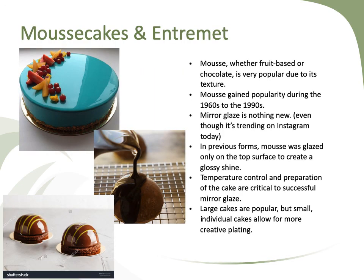There are mousse cakes and entremets. An entremet is basically a more complex mousse cake — it has mousse and cake but with additional elements. Mousse, whether fruit-based or chocolate-based, is very popular due to its texture. You can pack a lot of calories and fat into something that seems light as a feather. It really gained popularity during the 1960s through the 1990s, and there were very cool things done with mousse back then, though not nearly as beautifully made as today. Mirror glaze — the idea of putting a shiny glaze on top — is not a new trend either; it's been around since the 1940s and 1950s and is now going through a major revival.